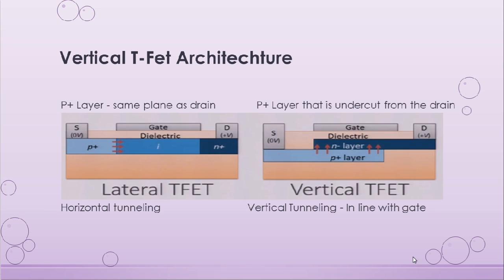Now that we are familiar with the basics of TFETs, let us look at the vertical TFET architecture. On the left side we have a lateral TFET, where current conduction happens due to horizontal tunneling of electrons from source to drain. The P-plus layer in the lateral TFET lies in the same plane as the N-plus layer of the drain. The problem in a lateral TFET occurs when the gate length is too small — in this case, electrons are able to tunnel from source to drain irrespective of the gate voltage. However, in the vertical TFET, if we have a P-plus layer that is undercut from the drain, the tunneling from source to drain is in the vertical direction, and this problem is solved. The vertical tunneling is in line with the gate voltage, and the gate voltage is able to control the current conduction from source to drain.